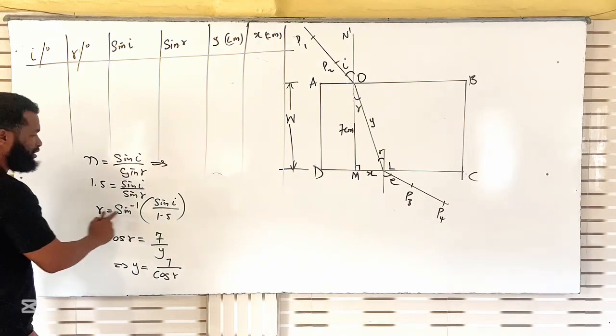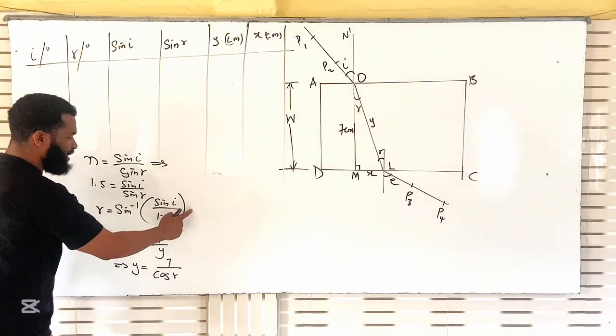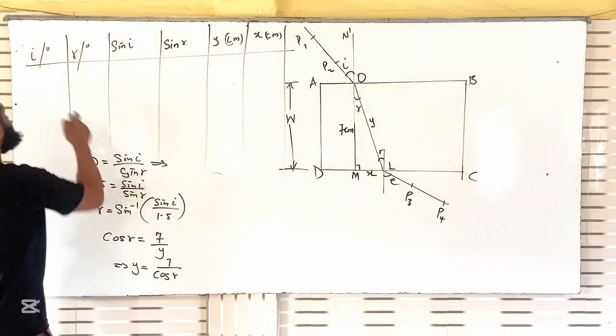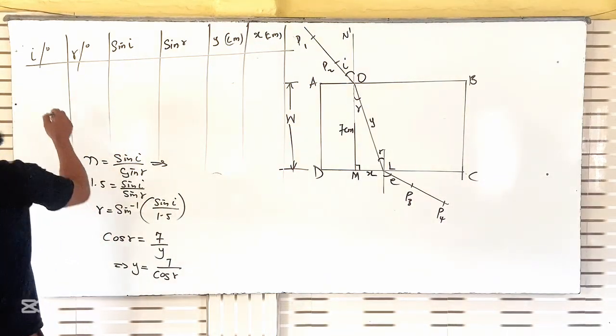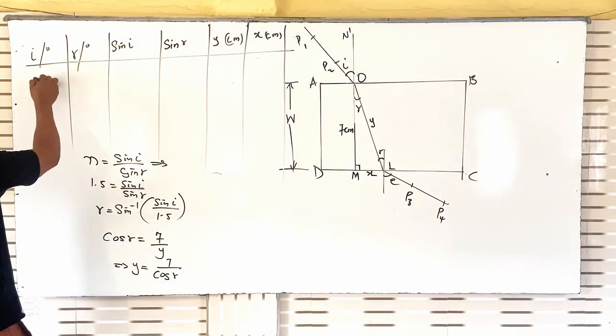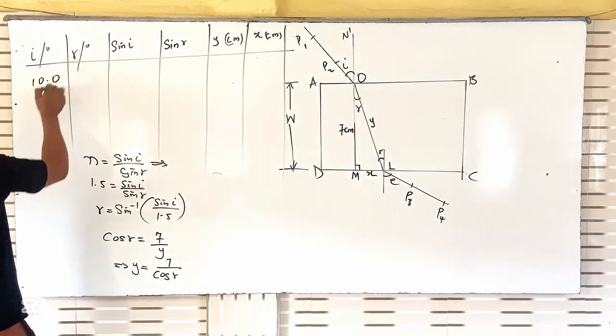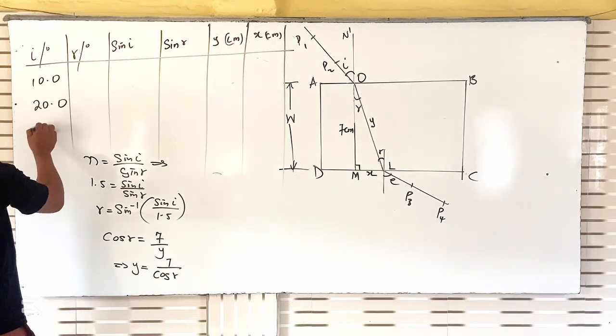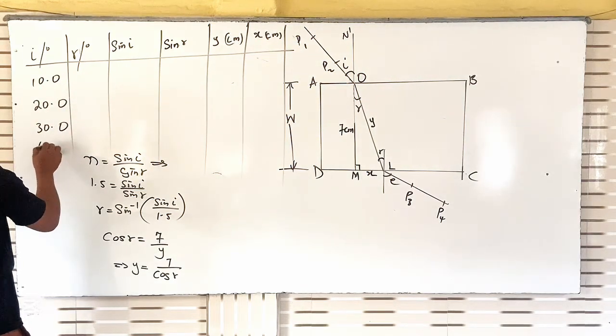First of all, let's get the value of R. In this experiment, the values of I you may have are 10.0, 20.0, 30.0, and 40.0. Now let's find what R is going to be.